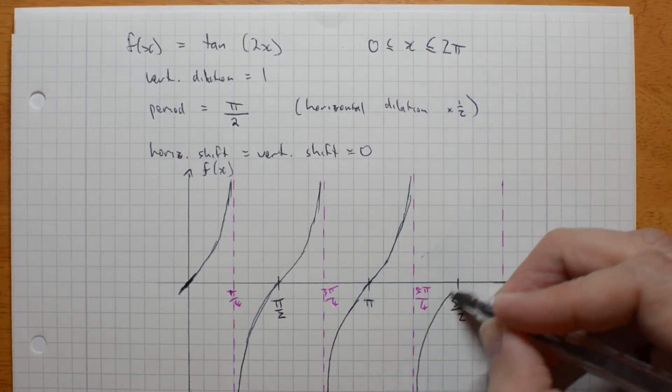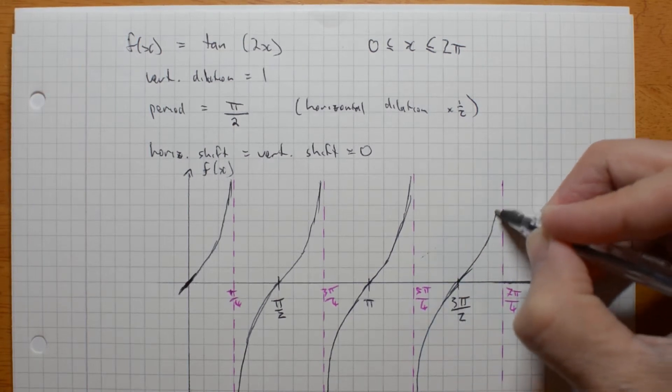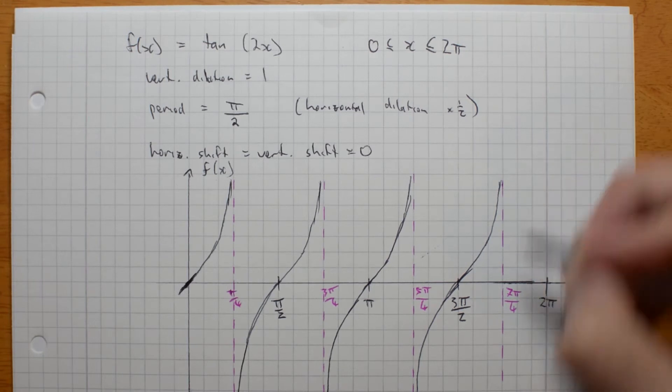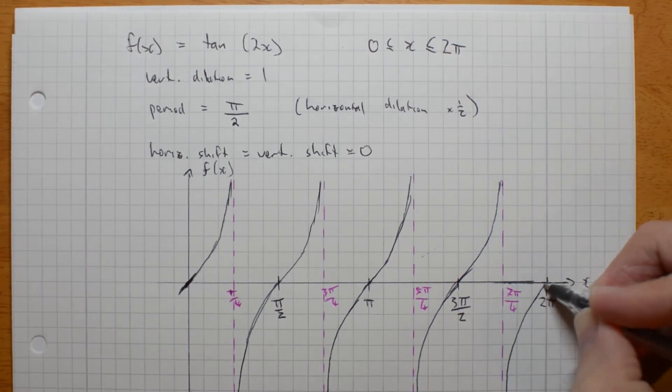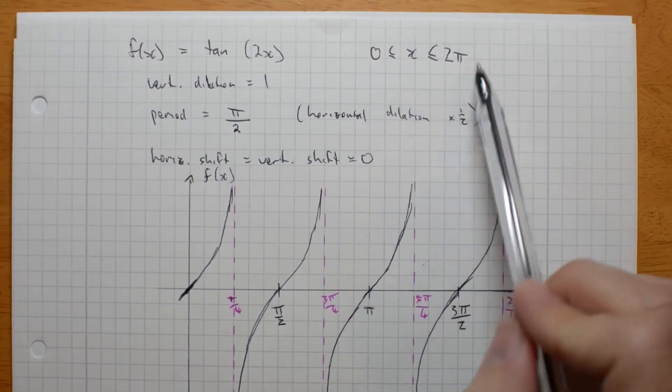And again, like sine and cos, you will get better at drawing these curves with practice. And I do have to draw the next one, coming up to 2 pi. So that's what my graph looks like in this range from 0 to 2 pi.